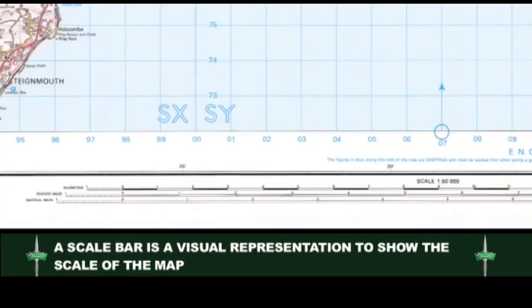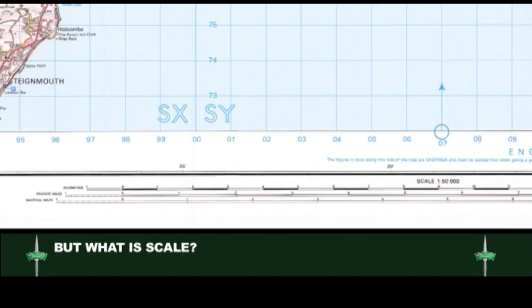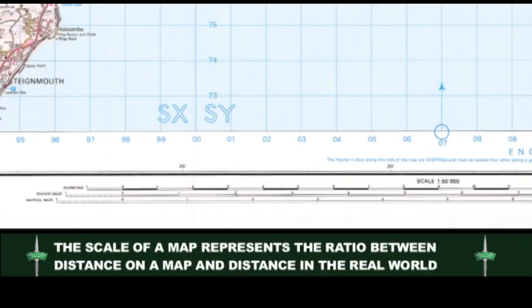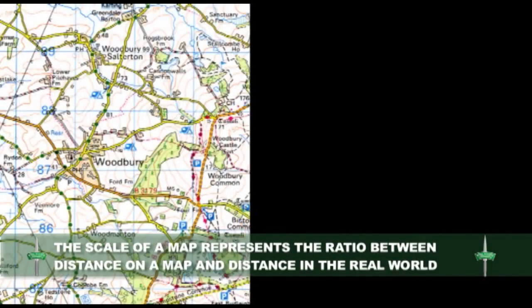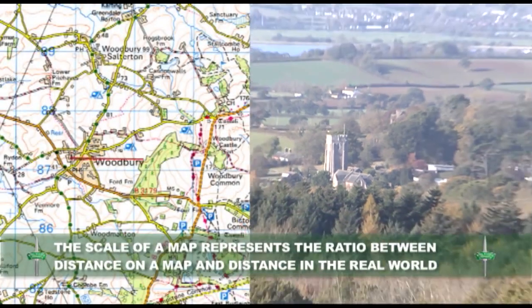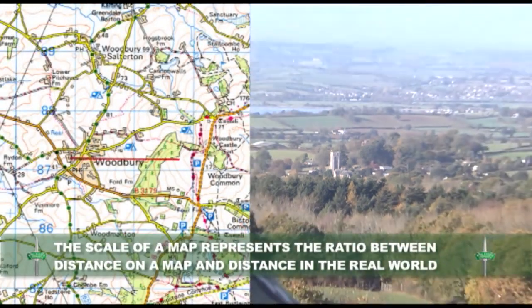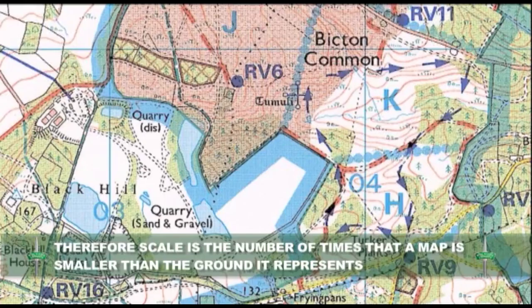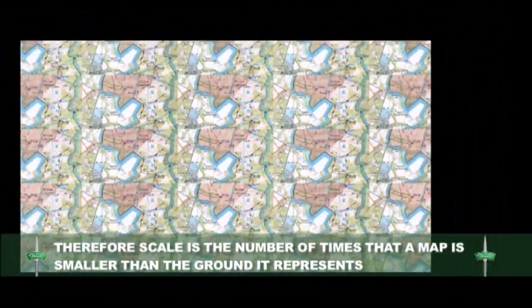A scale bar is a graphical representation to show the scale of a map. But what is scale? The scale of a map represents the ratio between distance on a map and distance in the real world. Therefore, scale is the number of times that a map is smaller than the ground it represents.